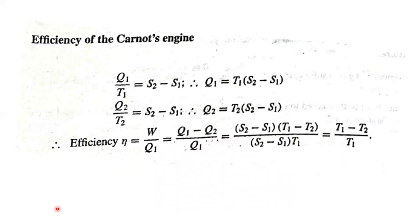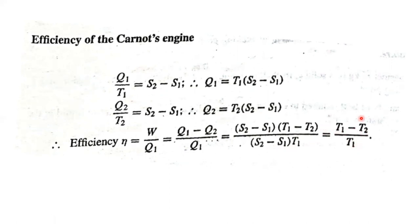The efficiency is the total work done divided by input energy. Total work done is Q1 minus Q2. Since Q1 equals T1 into (S2 minus S1) and Q2 equals T2 into (S2 minus S1), the efficiency equals (S2 minus S1) into (T1 minus T2) divided by (S2 minus S1) into T1, which gives (T1 minus T2) divided by T1. Higher the temperature difference, higher will be the efficiency. Lower the temperature difference, lower will be the efficiency.